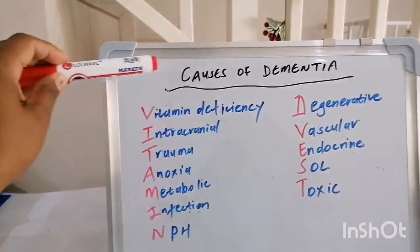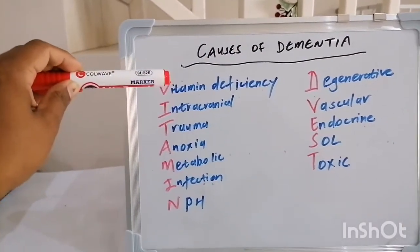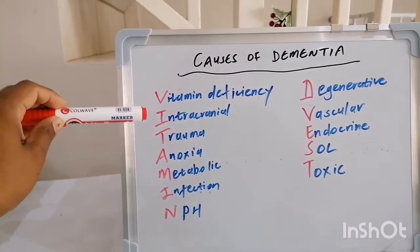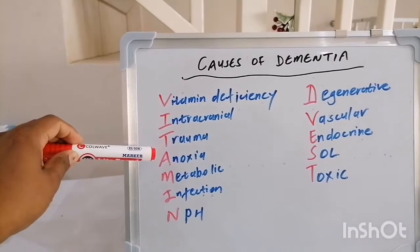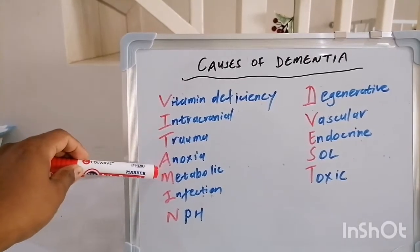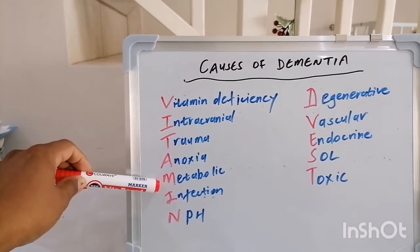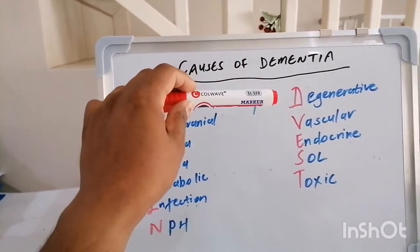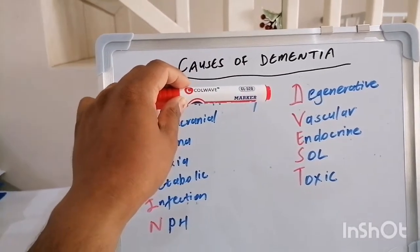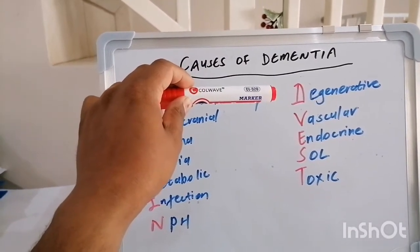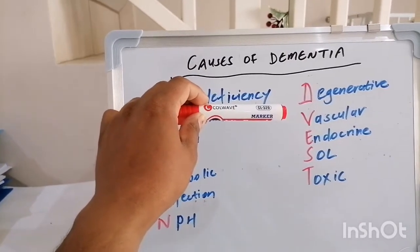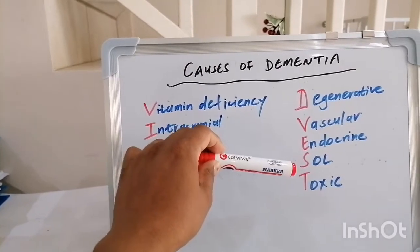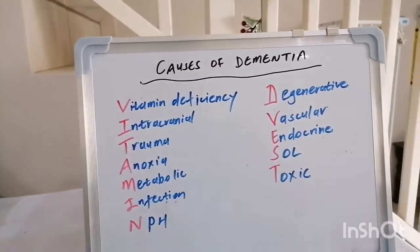Quick-fire recap of causes of dementia using VITAMIN D VEST: V for vitamin deficiency, I for intracranial issues, T for head trauma, A for anoxia, M for metabolic, I for infective especially post-encephalitis, N for normal pressure hydrocephalus, D for degenerative including mad cow disease, Huntington's and Alzheimer's, V for vascular in the way of multi-infarct dementia, E for endocrine, S for space-occupying lesion, T for toxin.